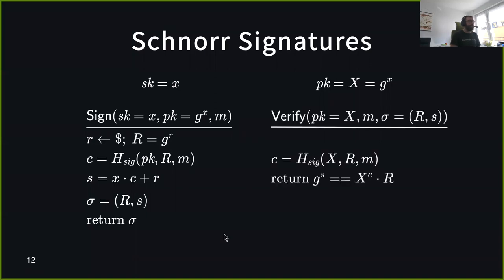On the verification side, the verifier recomputes the challenge C since it has the public key, R, and M. Then it checks the main equation in terms of public elements. If this holds, the signature is valid.